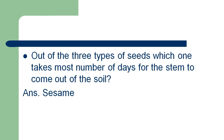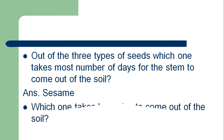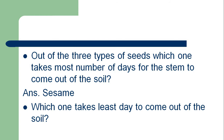The answer is season. Which one takes the least number of days to come out of the soil? The answer is mustard.